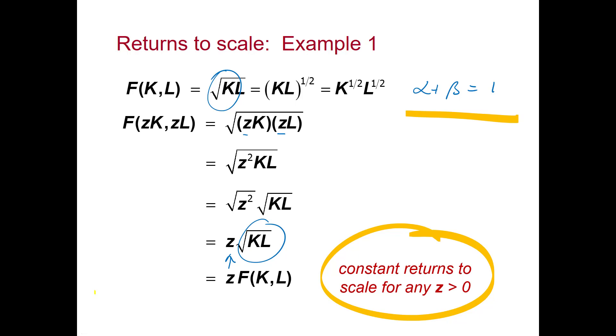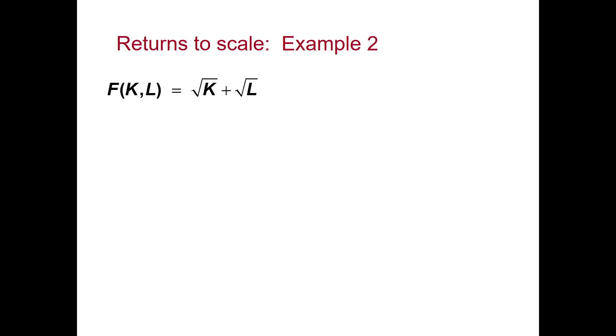Our next example also has the square root of capital and the square root of labour, but this time we're adding them. So once again, we increase both K and L by a factor of Z. We expand and simplify.